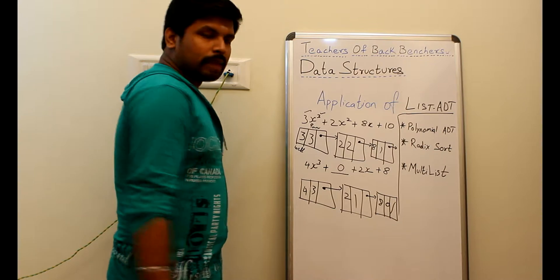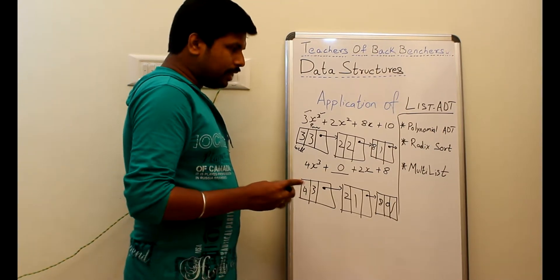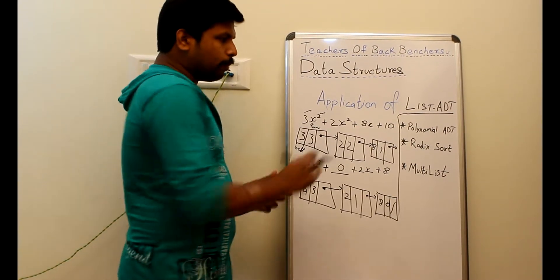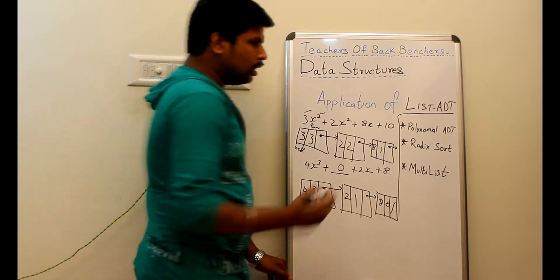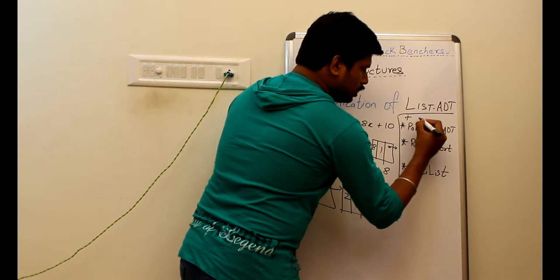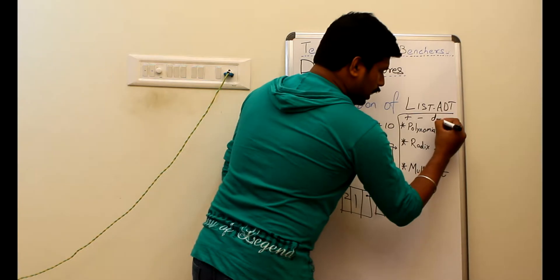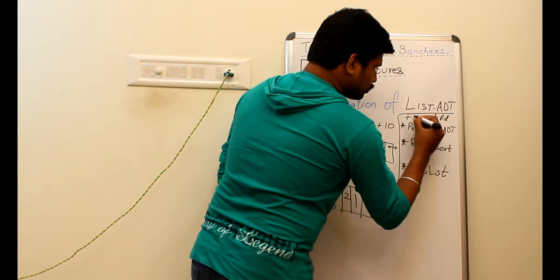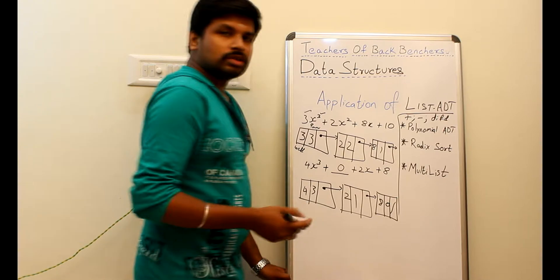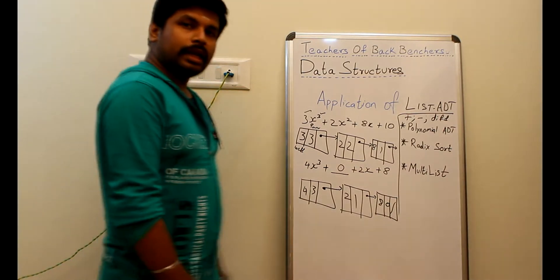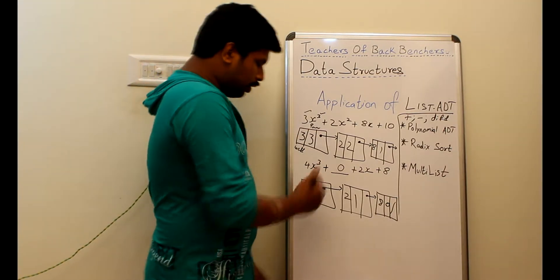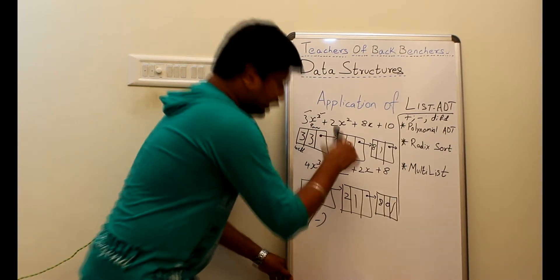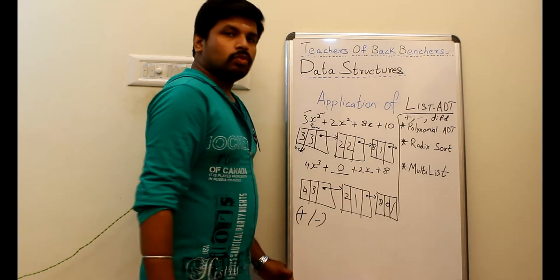This is how we represent the given equation in a linked list manner. The various operations in polynomial ADT are the addition process, subtraction process, and differentiation process. These are the three operations we are going to look at.